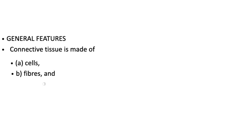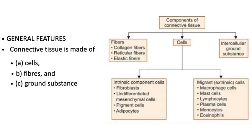Connective tissue is a basic tissue that gives support to other tissues. Since it connects, it is known as connective tissue. Connective tissue is made up of cells, fibers, and ground substance. These are mesodermal in origin.